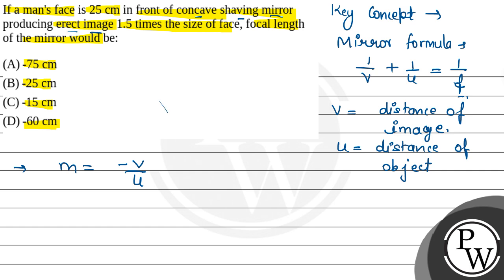It is given in the question that the image is an erect image. Now we will try to solve the question. What is given: the value of U is 25 cm — the man stands 25 cm in front of the mirror. This will be minus 25 cm, because the object is in front of the concave mirror, to the left, so we take the object distance as negative. So U equals minus 25 cm.